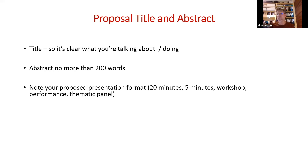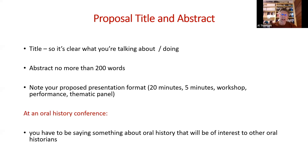The abstract is basically a couple of hundred words — no more than 200 — about what you're going to talk about, and 100 would be fine. Within those words, make it clear what presentation format you want: a 20-minute presentation, five-minute lightning, a workshop, a performance, or a thematic panel. The key point is that at an oral history conference you have to be saying something about oral history that will be of interest to other oral historians — that's the one thing everybody at this event will have in common.